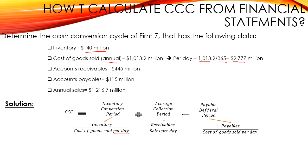Also, to determine the average collection period, we need to divide the accounts receivables — $445 million — over the sales per day. However, we are given the annual sales, so we need to determine the sales per day. We shall divide the annual sales by 365 days. As a result, the sales per day will be $3.333 million.